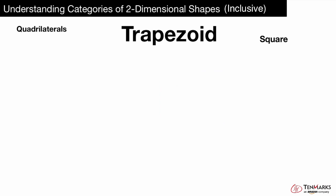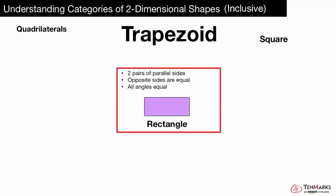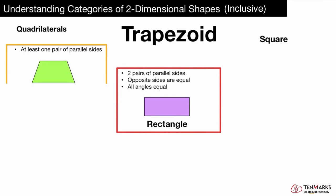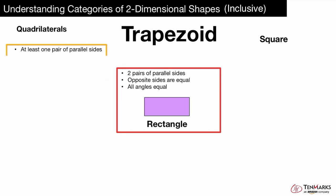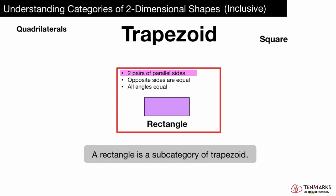Let's look at a rectangle. Is it a special type or subcategory of trapezoid? A trapezoid, by definition, has at least one pair of parallel sides. Does a rectangle have at least one pair of parallel sides? Yes, it actually has two pairs of parallel sides as well. So that means a rectangle is a special type or subcategory of trapezoid.